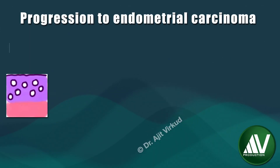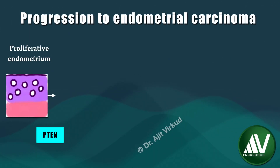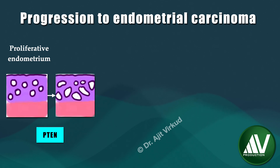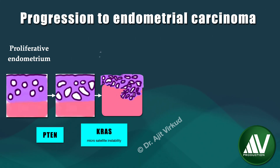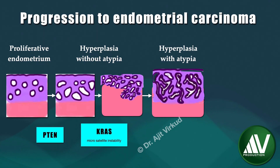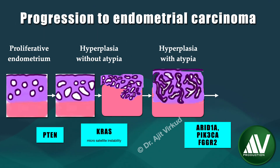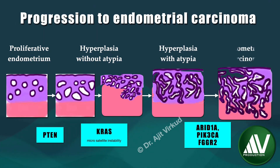This abnormally enhances the ability of estrogen receptors to express its target genes, resulting in increased and prolonged stimulation by estrogen. This may take years, but the end result is endometrial hyperplasia. This diagram shows the role of other genes such as KRAS that causes microsatellite instability, and other genes like ARID1A, PI3CA, and FGFR2 in the gradual progression of precancerous condition to endometroid cancer.